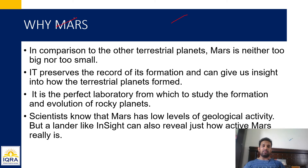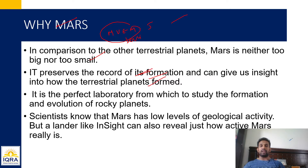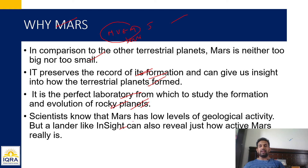Hum Mars mein hi kyun jaate hain hamesha? Mars ek aisa terrestrial planet hai — Mercury, Venus, Earth, Mars — yeh chaar terrestrial planets hain. Mars ek aisa planet hai jo Earth se bahut bada bhi nahi hai, chota bhi nahi hai — almost equal size mein. Mars mein record of information ho sakta hai jisse terrestrial planets kaisa form hote hain — yeh malum bhi hoga. Scientist ke liye yeh perfect laboratory hai to see the evolution of rocky planets. Mars mein post geological activity bahut kam hoti hai, turbulence bahut kam hota hai — so experiments can be done safely.